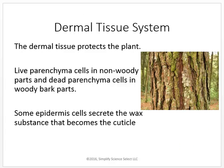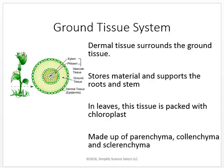The dermal tissue system is a collection of cells forming the outer layer. It contains live parenchyma cells in non-woody parts and dead parenchyma cells in woody bark parts. Some epidermis cells secrete the waxy substance that becomes the cuticle. The ground tissue system is inside, surrounded by the dermal tissue system. It stores materials and supports the roots and stem. In leaves, this tissue is packed with chloroplasts, and it's made up of parenchyma, collenchyma, and sclerenchyma.